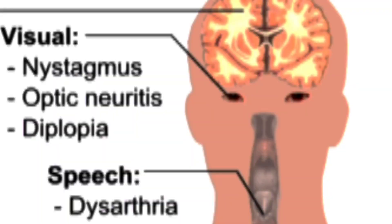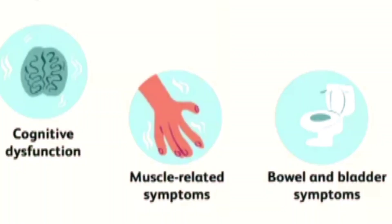Visual disturbances include optic neuritis, pain in the eyes, and diplopia. Bulbar disturbances can lead to dysarthria, dysphagia, dysphasia — difficulty in speaking and difficulty in swallowing. These things can happen as part of bulbar deficits.